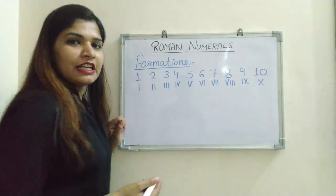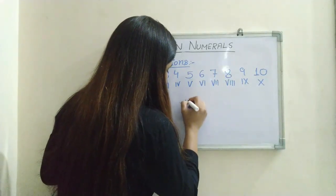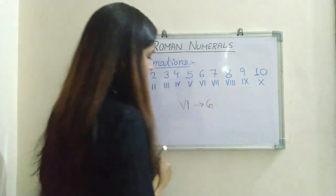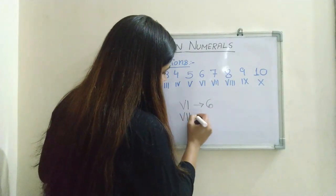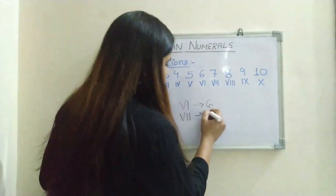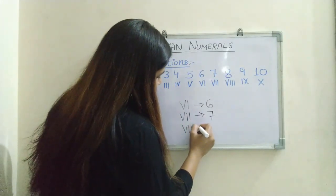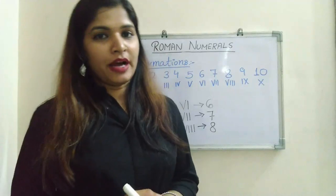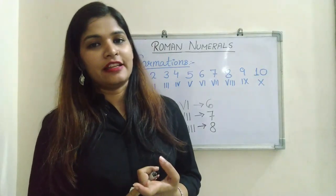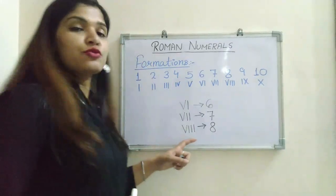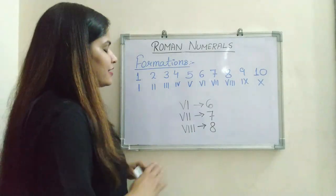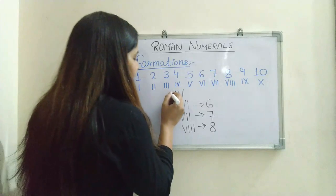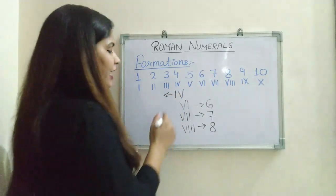When a symbol appears after a larger number, like VI, it means 1 more than 5, so it becomes 6. Similarly, VII means 2 more than 5, giving 7, and VIII means 3 more than 5, giving 8. You need to keep in mind that we cannot repeat any letter more than 3 times. So we stop there, as we can't add more I's after V. If a symbol appears to the left of a larger number, it means subtraction — 1 less than 5 — giving IV, which is 4.